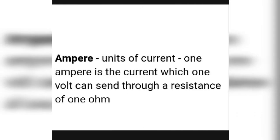The second main unit of the electrical system is the ampere. Ampere is the unit of current. One ampere is the current that one volt can send through a resistance of one ohm.